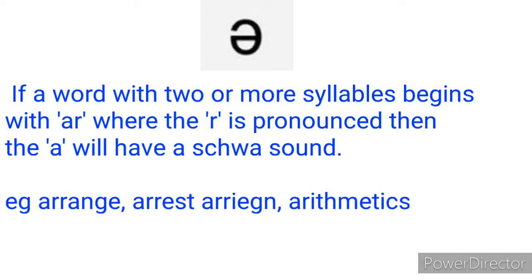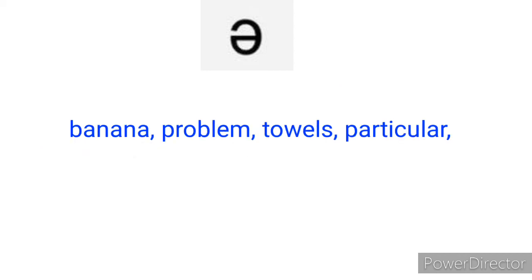The schwa sound is normally found at the beginning and end of words, but you can also find it in the middle of words. Syllables with the schwa in the middle are always unstressed, but there are no strict rules for identifying them in the middle of words. Examples: banana, problem, terrors, particular — all have the schwa in the middle. Always remember that any syllable containing the schwa sound does not attract stress. For example, 'particular' has four syllables, three of which have the schwa sound, and the stress falls on the only syllable without the schwa: 'tic'.